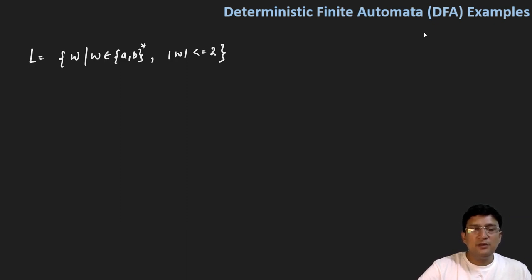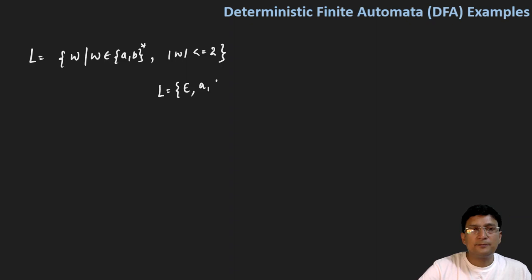It means the zero length string would be accepted, one length string would be accepted, and the two length strings AA, AB, BA, or BB would also be accepted.